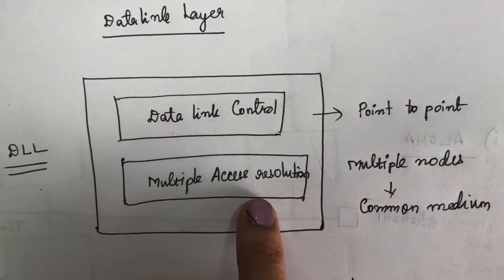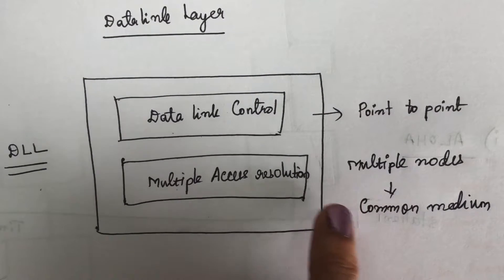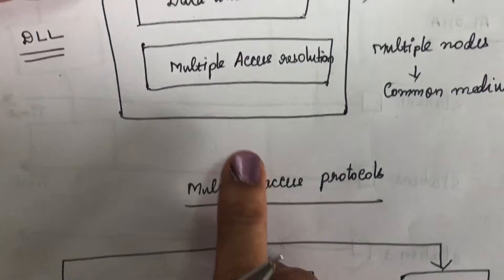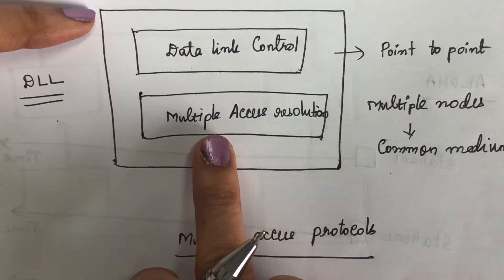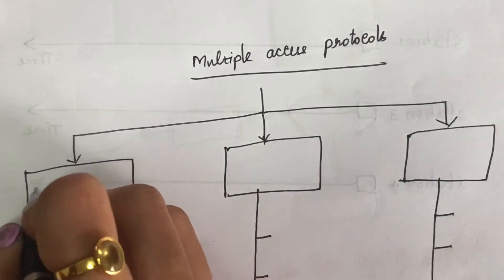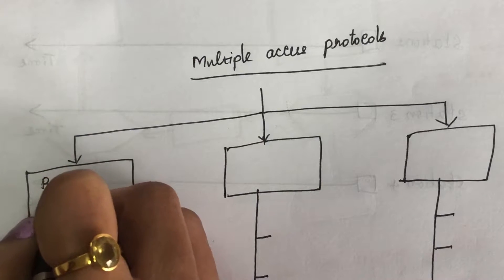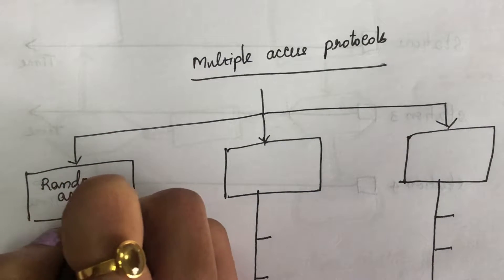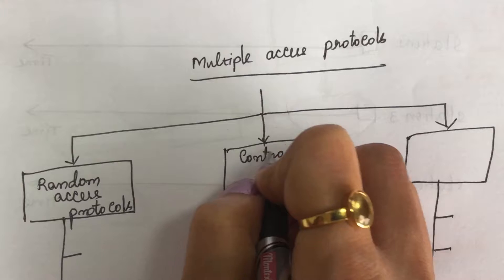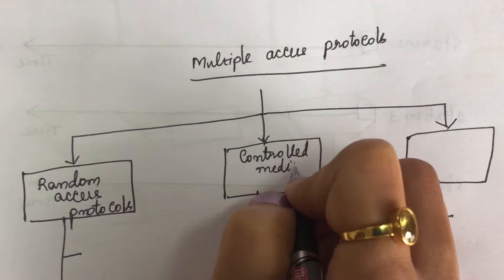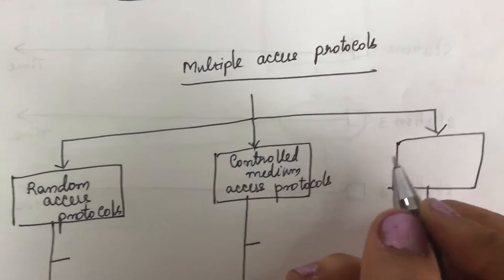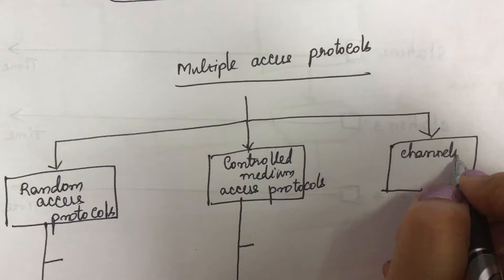This media access control sub-layer will coordinate access to all the broadcasters. Coming to the protocols required for the multiple access layer, they are divided into three categories: one is random access protocol, the second one is controlled medium access protocol, and the third is channelization protocols.